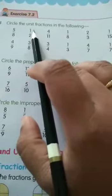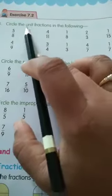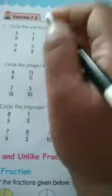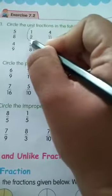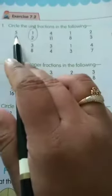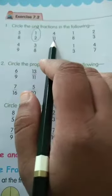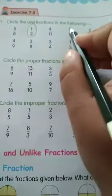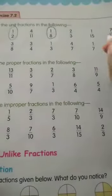Wherever we find numerator 1, we have to circle that. So here 1 by 2 — circle that. Next, 5 by 8 no. 1 by 2 we have circled. Next, 4 by 11 no. 1 by 8 — so we have to circle this. This is a unit fraction.